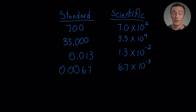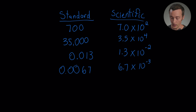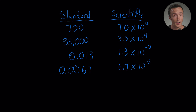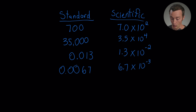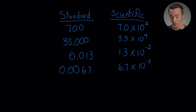Scientific notation gives scientists and mathematicians a quick and easy way to write very large numbers or very small numbers. So when we have a large number like 700, that's 700 in standard form, but we can rewrite it in scientific notation as 7.0 times 10 to the second power. Similarly, 35,000 becomes 3.5 times 10 to the fourth power. Small numbers like 0.013 become 1.3 times 10 to the negative second, and 0.0067 becomes 6.7 times 10 to the negative third power.